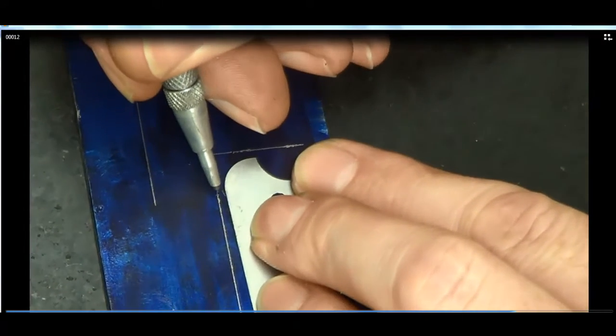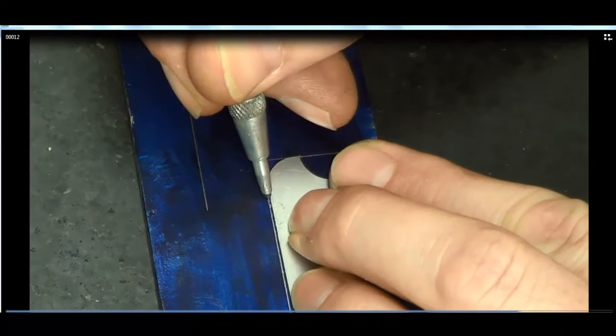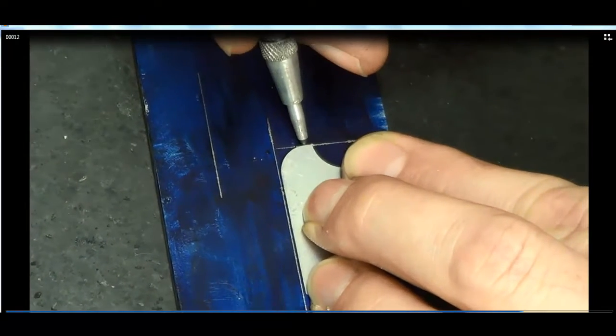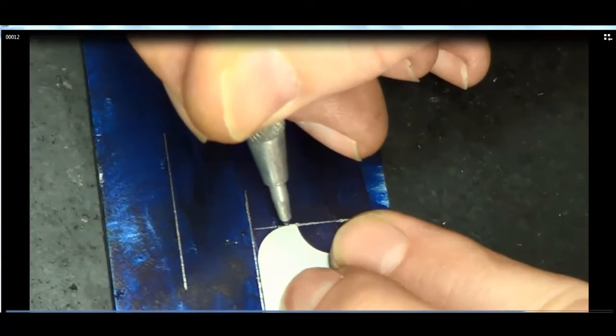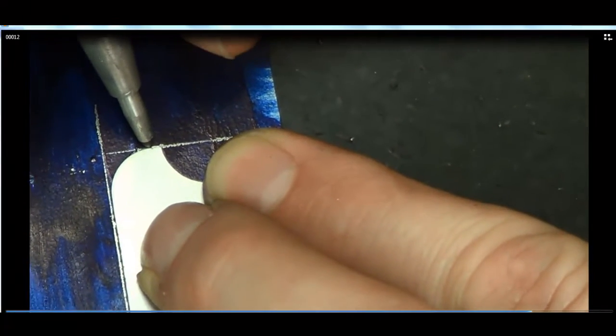What I like to do first is line my scriber up on the bottom line, or the one inch line, and we're gonna slide the scriber up to the 3.380 mark.